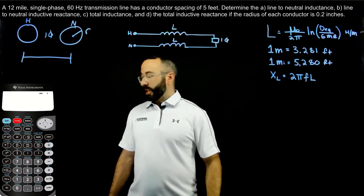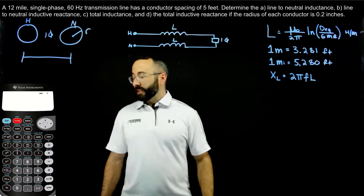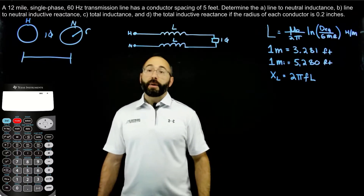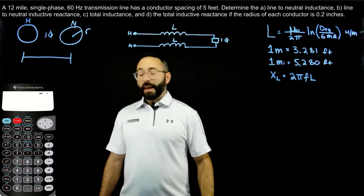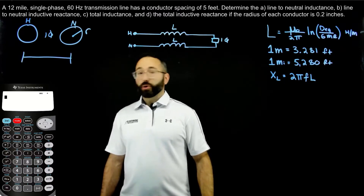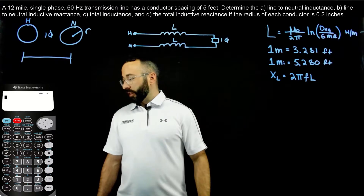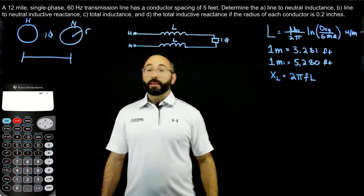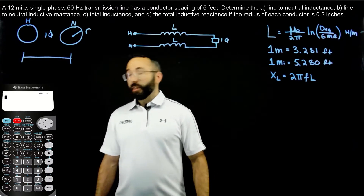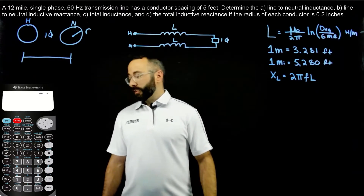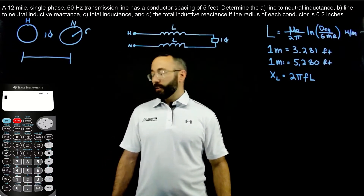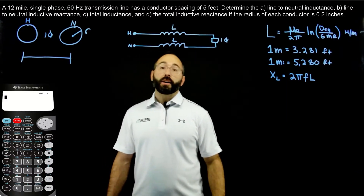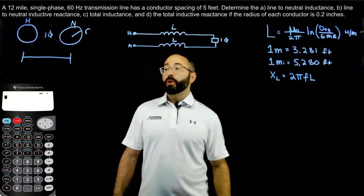The problem says: a 12-mile, single-phase, 60 Hz transmission line has a conductor spacing of 5 feet. Determine A, line-to-neutral inductance; B, the line-to-neutral inductive reactance; C, the total inductance; and D, the total inductive reactance, if the radius of each conductor is 0.2 inches.